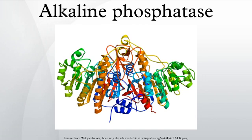In gram-negative bacteria, alkaline phosphatase is located in the periplasmic space, external to the cell membrane. Since this space is much more subject to environmental variation than the actual interior of the cell, bacterial alkaline phosphatase is comparatively resistant to inactivation, denaturation, and degradation, and also has a higher rate of activity.